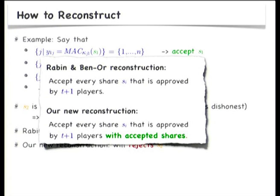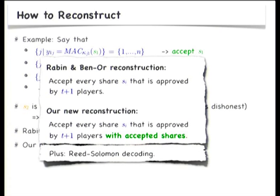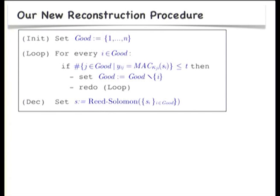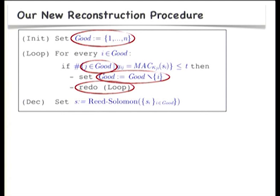The difference between the two reconstruction procedures: the Rabin-Benor reconstruction accepts every share approved by T plus one players. In our reconstruction, we accept every share approved by T plus one players with accepted shares, and on top of that, we use Reed-Solomon decoding on the accepted shares. Formally, we maintain a set of 'good' players — to start with, all players. When deciding whether to accept a share, we only count votes of players in the set-good. Once we realize a player is dishonest, we kick them out of set-good and restart deciding which shares to accept. Then we do Reed-Solomon decoding on the shares of the players that end up in set-good.